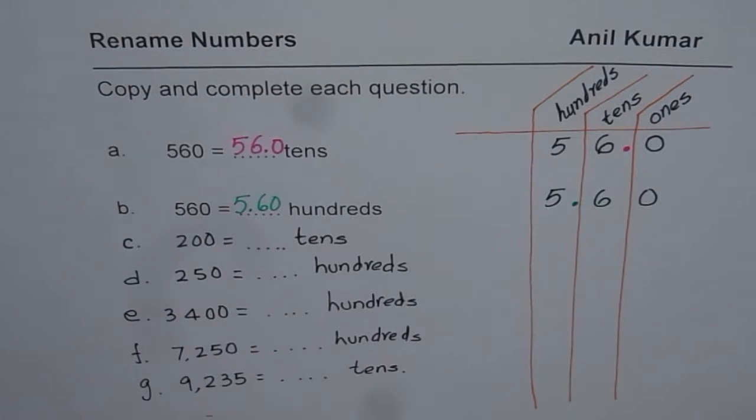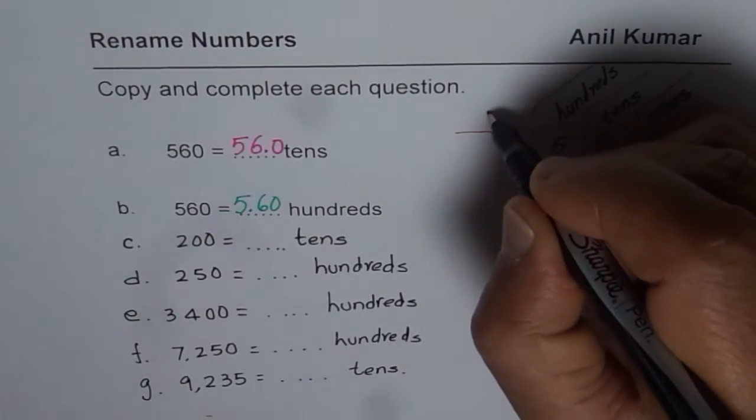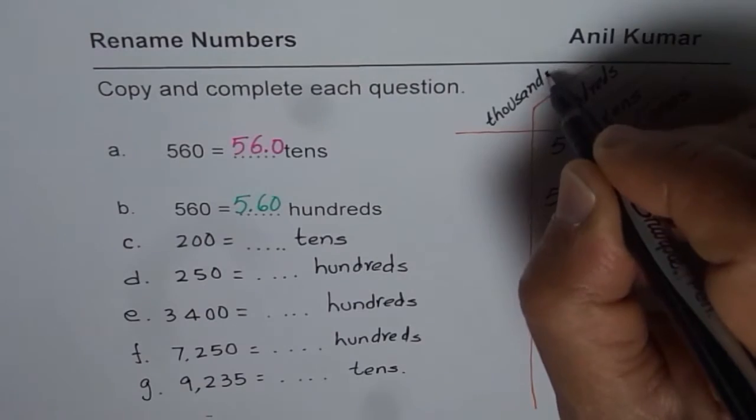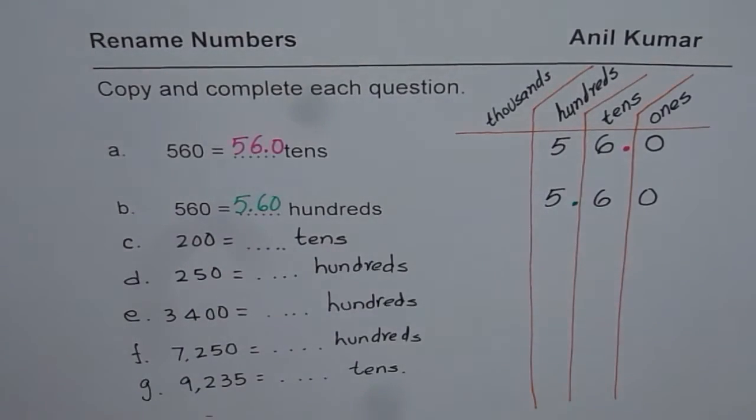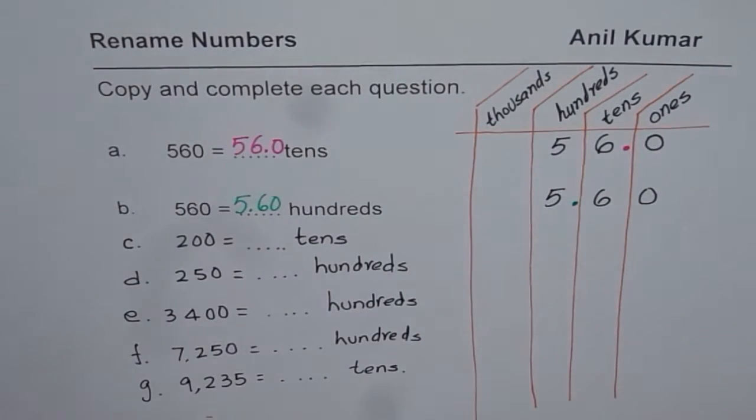Since I have extended to thousands, I will add one more column to the left side of hundreds and that is thousands. So let us add this column. So now we will also work with thousands in the same video. So let us continue with this strategy we learned.